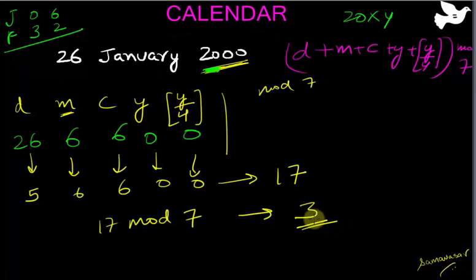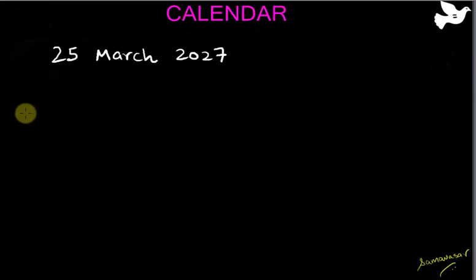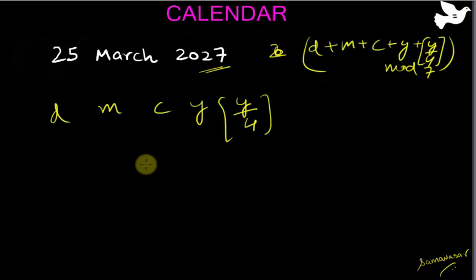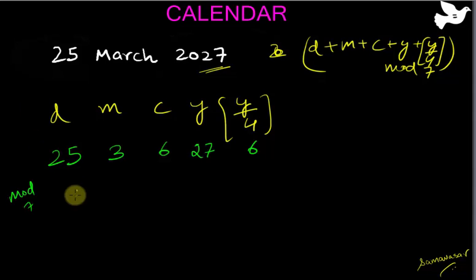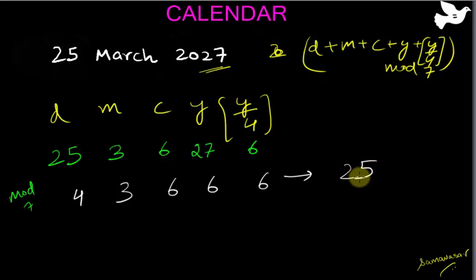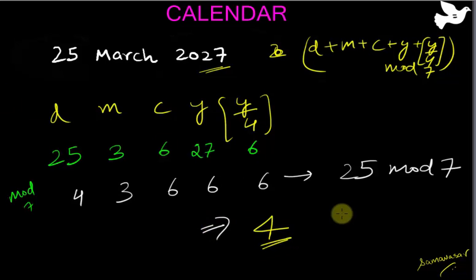Take another example: 25th March 2027. First, check — this is not a leap year, so no complications. D is 25; March has code 3. C is 6 because it is a 20xx year. Y is 27; 27 divided by 4 gives quotient 6. Taking mod 7 remainders: 25 mod 7 is 4, 3 mod 7 is 3, 6 mod 7 is 6, 27 mod 7 is 6, 6 mod 7 is 6. Sum: 4 plus 3 plus 6 plus 6 plus 6 equals 25. Then 25 mod 7 gives remainder 4, and 4 means Thursday.